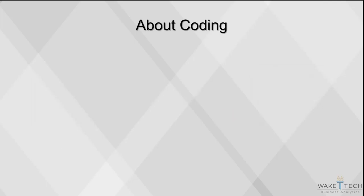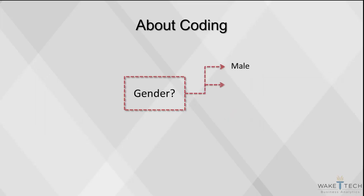For example, if you ask the question 'what gender,' you might end up with the answers male, female, M, F, etc. Coding will avoid such inconsistencies.